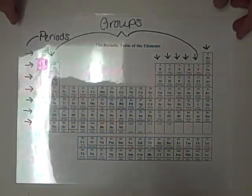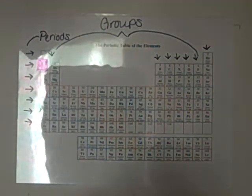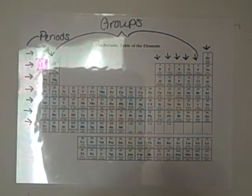Another thing Glenn should know is the periods. That will tell you the number of energy levels that atom has. So lithium, for example, would have 2 energy levels.